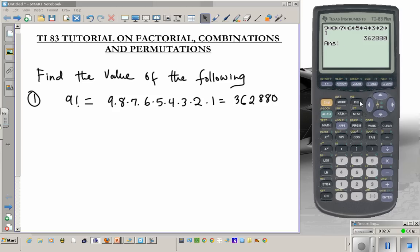The way this works is, before you do that, you have to enter the number first. So 9, and then math, probability 4, factorial, enter. You see, we get the same answer: 362,880. There's another way to access that factorial. If you forgot math, you can go to catalog.